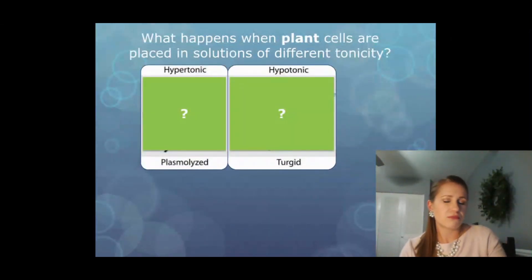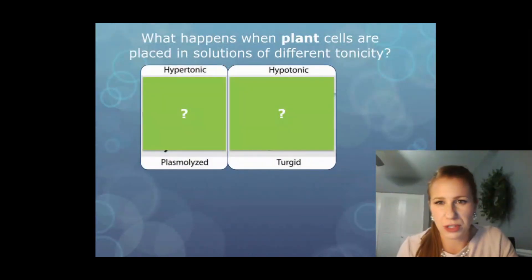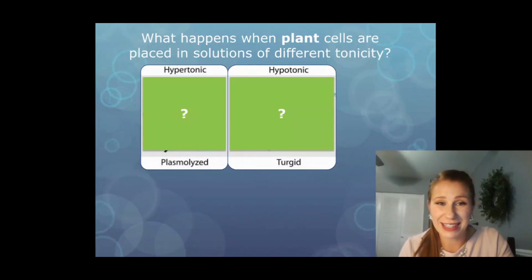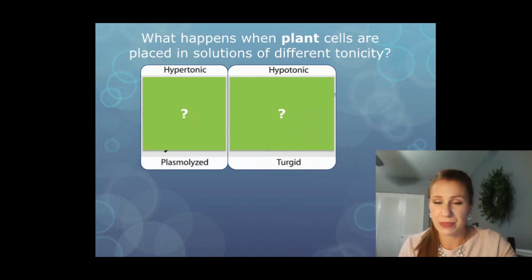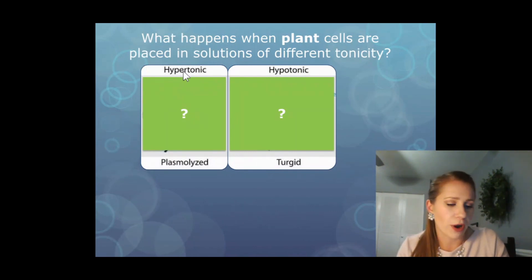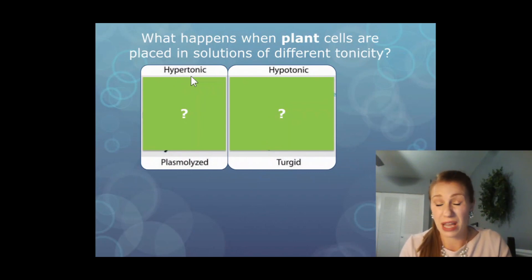Let's take a hypothetical situation. What happens when plant cells are placed in solutions of different tonicity? What this means is what happens if we put a plant cell in either pure water or salt water. If we put a plant cell in a hypertonic solution, that would be something like salt water, or maybe you just don't water your plants for a long time.